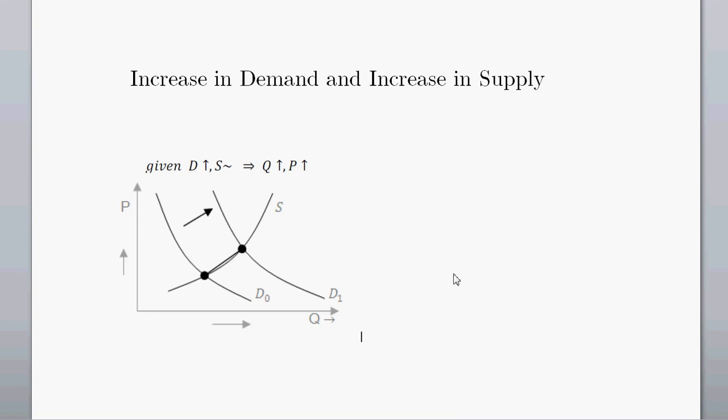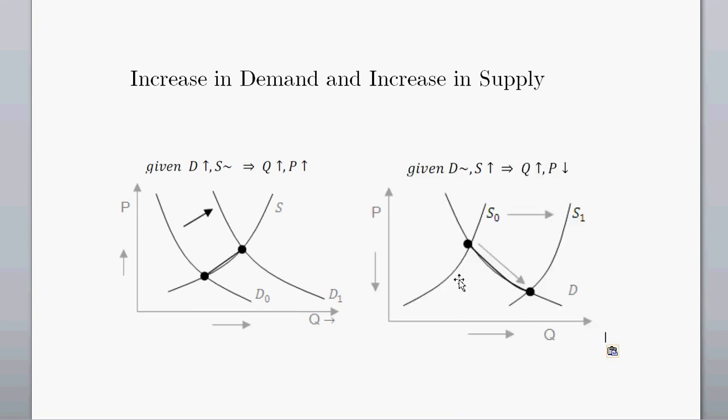What happens when we have an increase in supply? Given an increase in supply, going from S sub nought to S sub 1, we can see that there's a decrease in price and an increase in quantity.